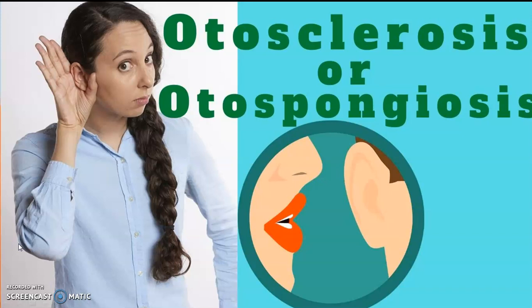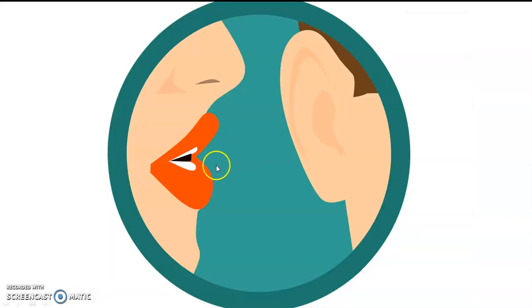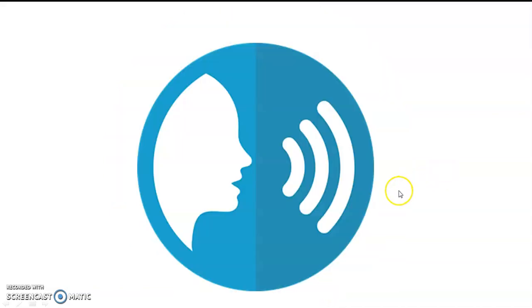Let's take an example of a newly married woman going to her mother-in-law's place, where the mother-in-law is trying to speak but the woman is not able to hear her properly, hence she is not able to respond. She doesn't know what to do and she is not able to inform her newly wed husband either.